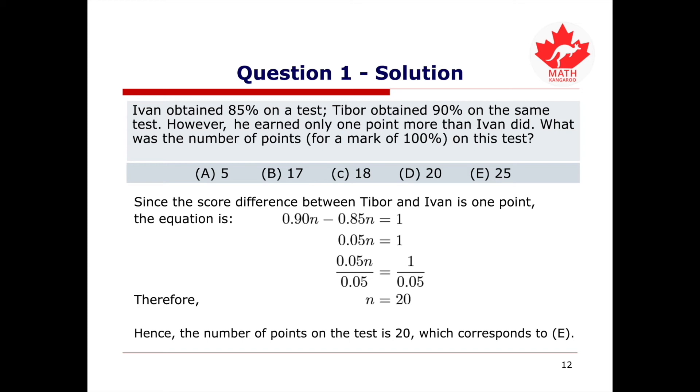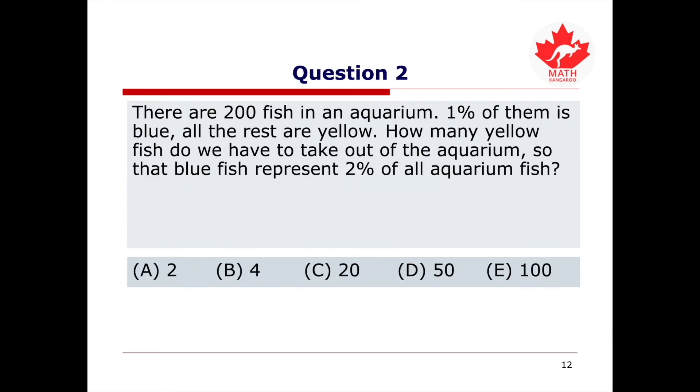Now we are ready for the next question. We will now look at question two. There are 200 fish in an aquarium. 1% of them is blue. All the rest are yellow. How many yellow fish do we have to take out of the aquarium so that blue fish represent 2% of all aquarium fish? Be sure to pause the video to try this question on your own.